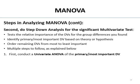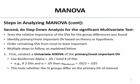You order your dependent variables from most to least important for testing hypotheses, then follow the steps. First, conduct a univariate ANOVA of the primary or most important DV — analyze that DV like the other ones don't even exist. Use a Bonferroni-corrected alpha level of 0.05 divided by the number of DVs — so if you have two, it's 0.025. This tests whether the IV groups differ on the primary DV of interest.